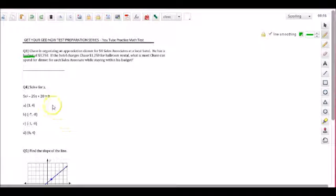The word budget is letting us know that it's not a fixed amount but a budget. Now we always want to go to the question. So the question says what is the most he can spend for dinner for each sales associate while staying in his budget. We want to know the absolute most he can spend, so this is leading us to set up what we know as an inequality.